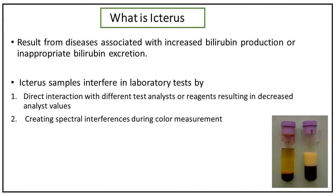What is icterus? Icterus results from diseases associated with increased bilirubin production or inappropriate bilirubin excretion. Icteric samples interfere in laboratory tests by direct interaction with different test analytes or reagents, resulting in decreased analyte values and creating spectral interference during color measurement.